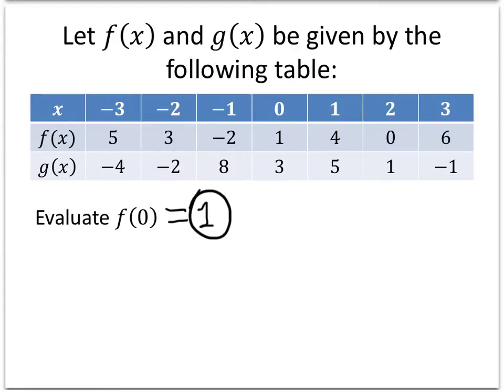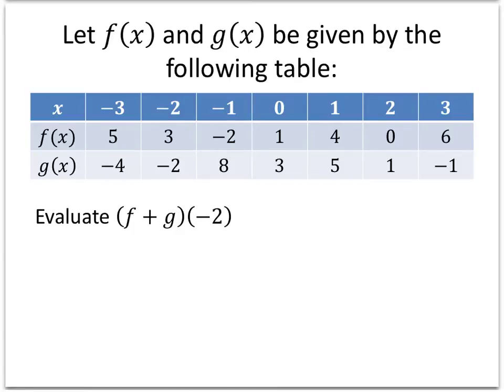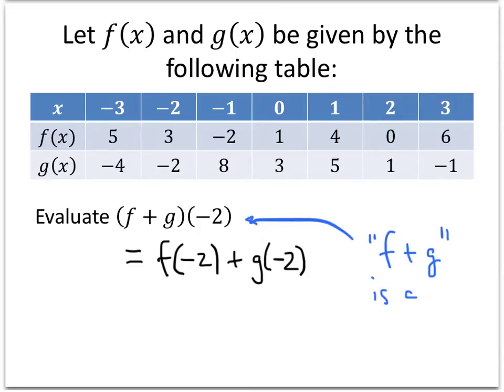Okay, now let's do something a little bit more complicated. Let's evaluate f plus g of negative 2. Now there's a lot of parentheses flying around here, but all f plus g of negative 2 means is f of negative 2 plus g of negative 2. So the idea here is that f plus g is a new function that's related to f and g. And the rule for the f plus g function is you take whatever you're trying to plug into f plus g, you plug that into f, you also plug it into g, and you take your two answers and you add them together.